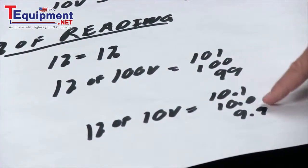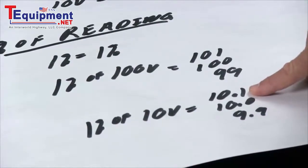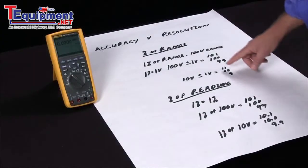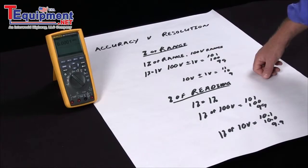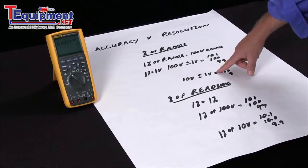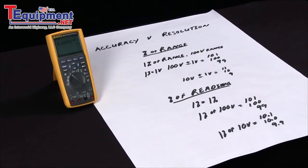So here with the percent of reading, the accuracy is a tenth of a volt. The same thing specified with percent of range, one percent is now plus or minus one volt. So it's very important if you're looking for accurate readings to make sure you select the device with a percent of reading versus a percent of range.